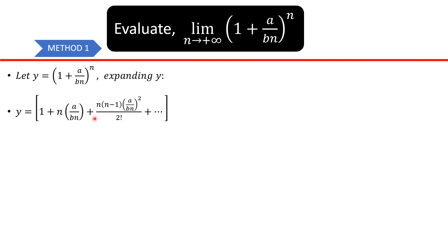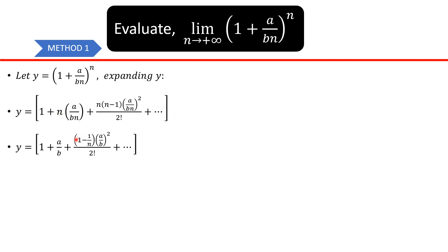Continuing: plus n times (n minus 1) times b squared — we're ignoring a because a is just 1 — all over 2 factorial, and so on. If you simplify, this n goes with that n, so we're left with a over b. The n squared term: one of those n's cancels, and distributing n into (n minus 1) gives us 1 minus 1 over n.